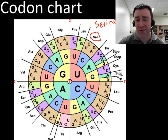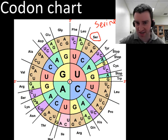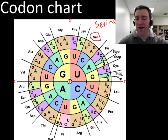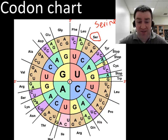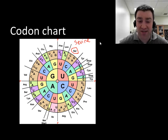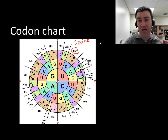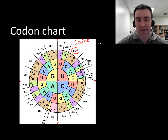One thing really worth emphasizing about this chart is that it's a practically universal translation system for all living species, with only a few minor exceptions in a few prokaryotic bacterial species. The vast majority of species on this planet build their proteins from the exact same coding. That's strong evidence for common ancestry of all living things, and it's also what makes genetic engineering possible — we can transfer pieces of DNA code from species to species because they read it and build proteins the exact same way.